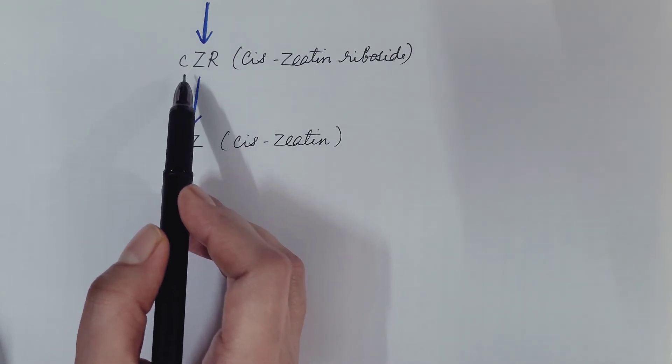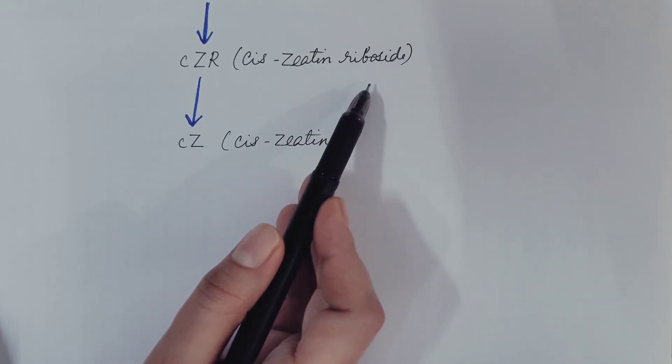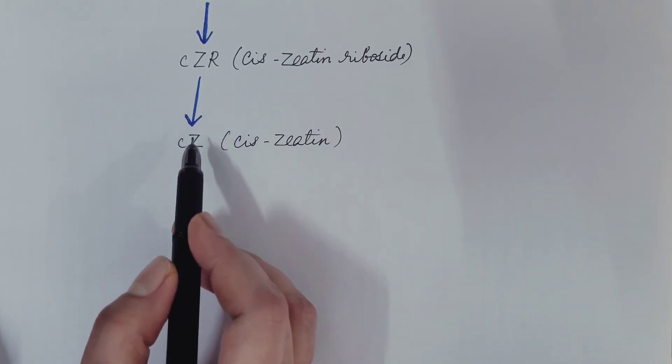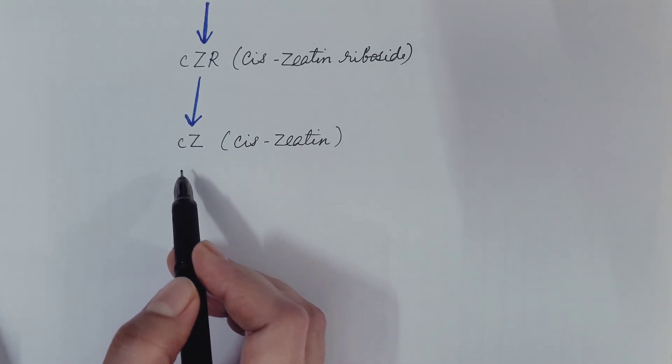Cis-zeatin riboside monophosphate is then converted into cis-zeatin riboside, which is then converted into cis-zeatin. In this way cytokinin is synthesized.